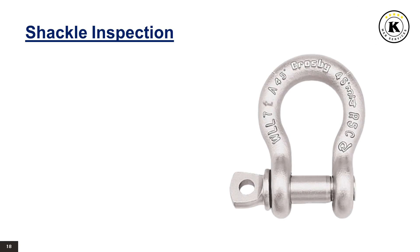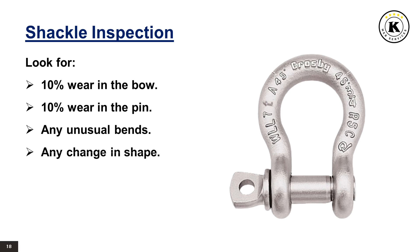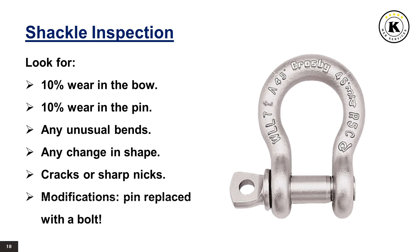For shackle inspection, look for 10% wear in the bow, 10% wear in the pin, any unusual bends, any change in shape, cracks or sharp nicks, and modifications such as a pin replaced with a bolt.